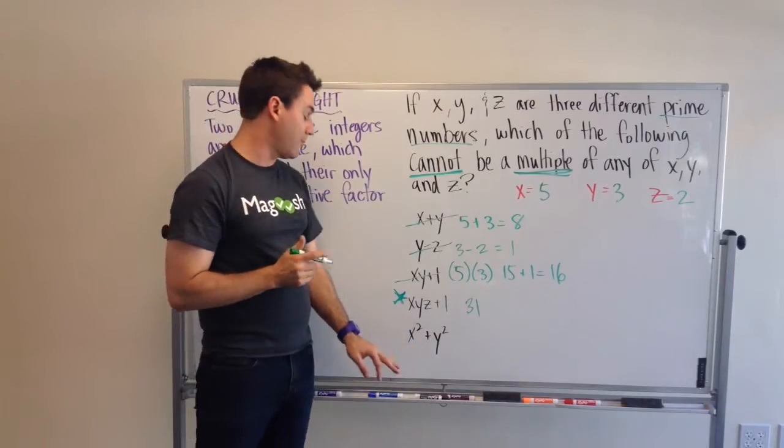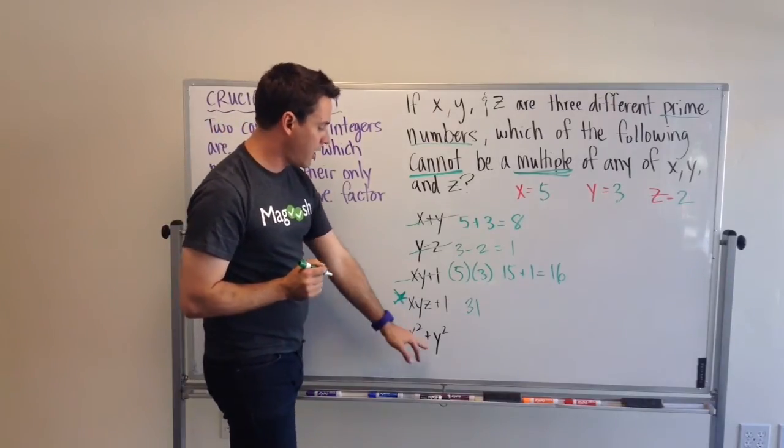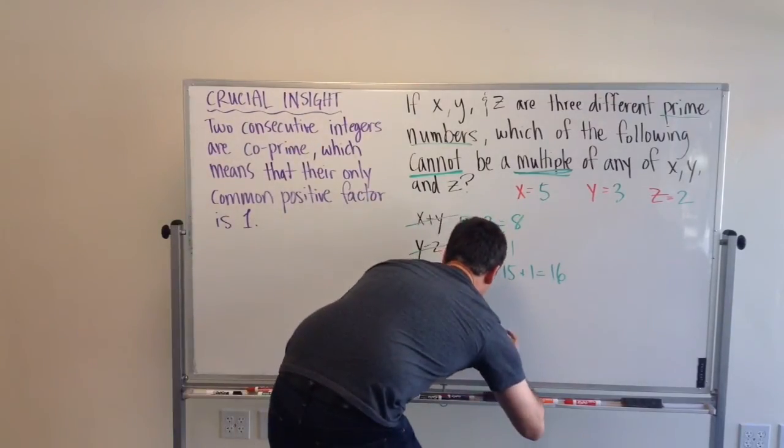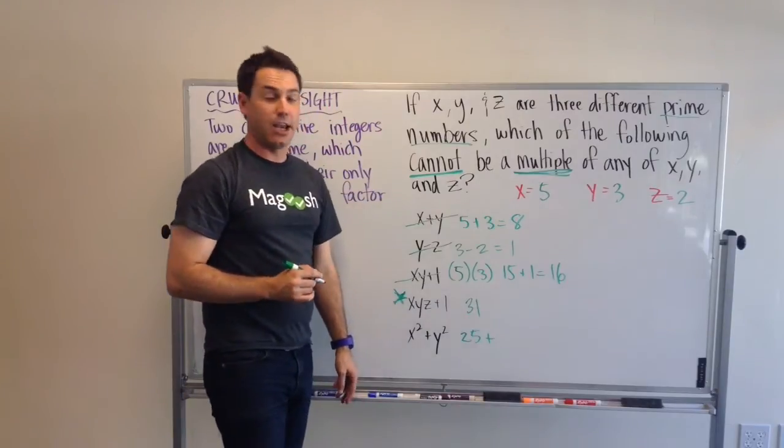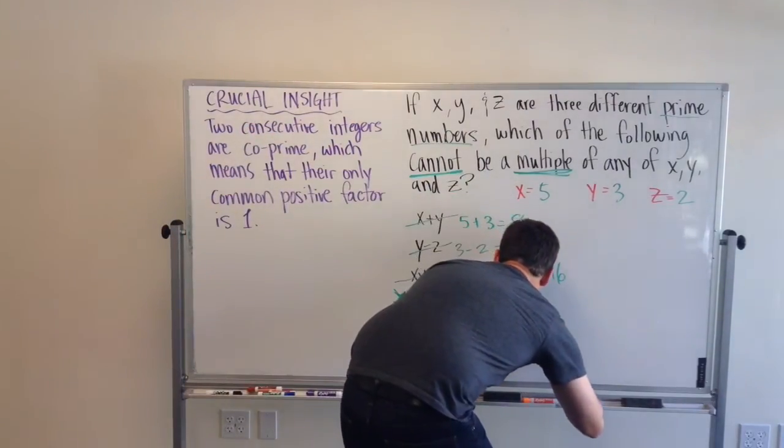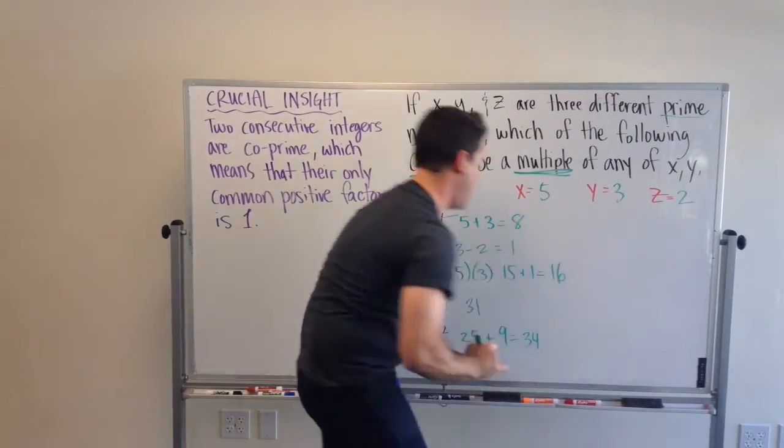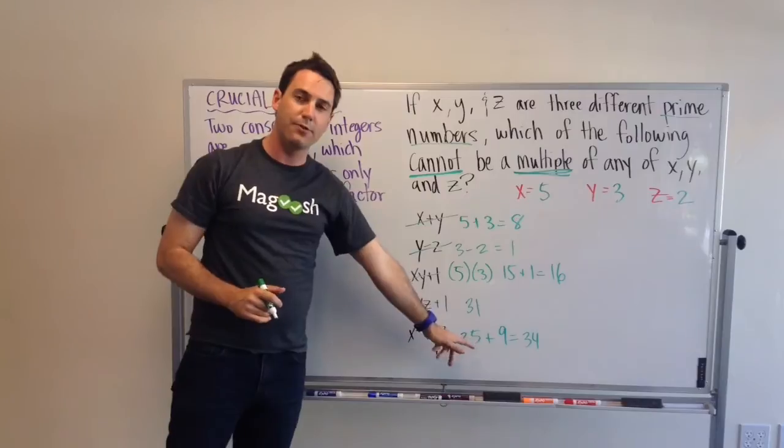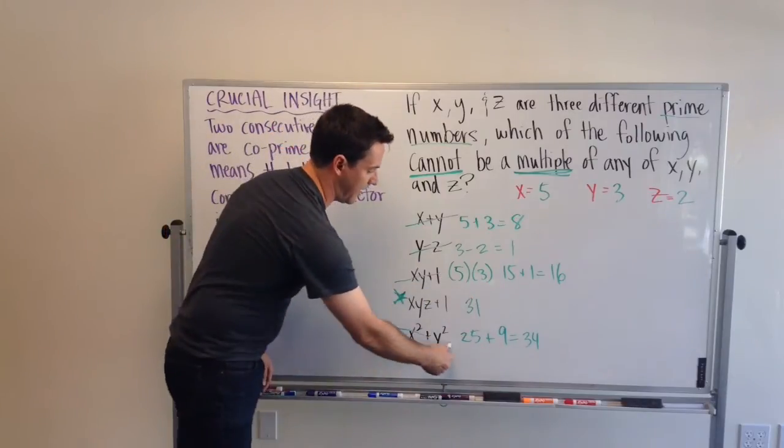Alright. One more answer choice to check. x squared plus y squared. So, 5 squared is 25, plus 9, because 3 times 3 is 9. And, that gives us 34. Are any of these numbers a multiple of 34? Yes, 2 is. So, we can eliminate it.